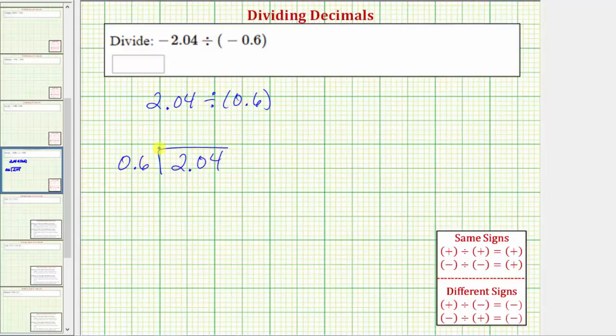From here, we need to recognize that the divisor is a decimal. We want the divisor to be a whole number. And therefore, to make 0.6 a whole number, we would have to move the decimal point to the right one place. And we can do this as long as we do the same to the dividend. So we'll also move the decimal point to the right one place in 2.04.